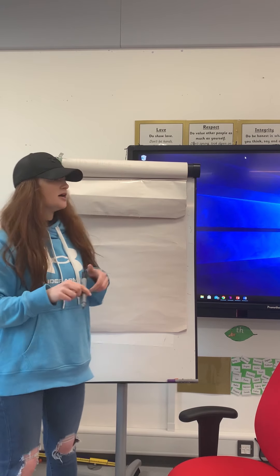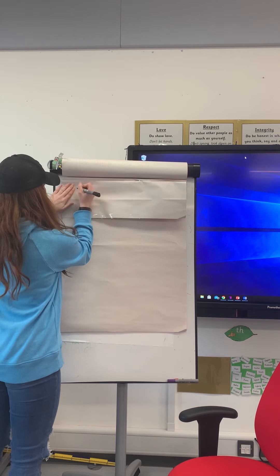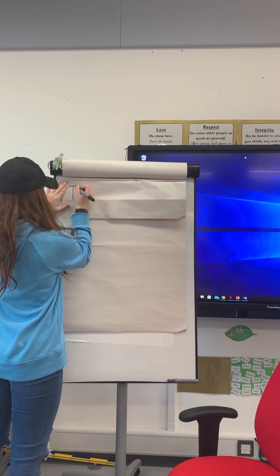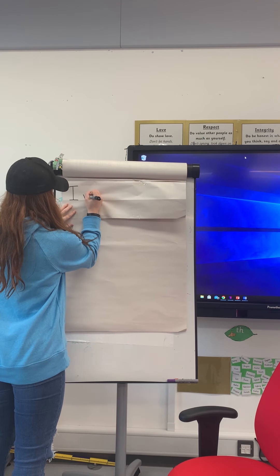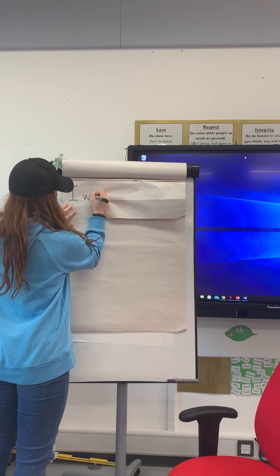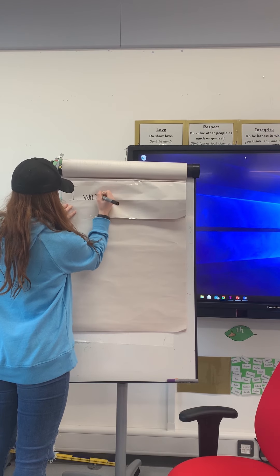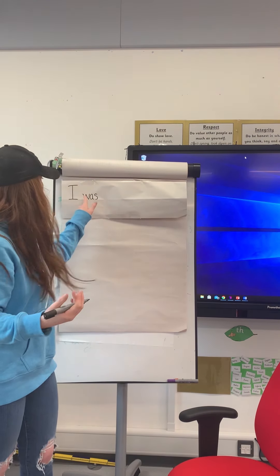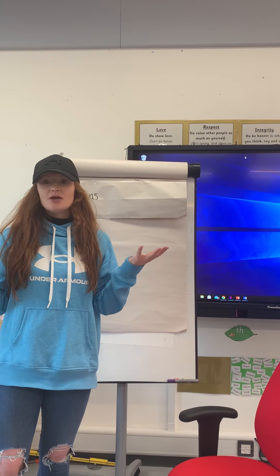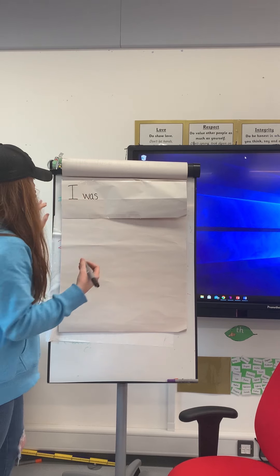Now we need to try and write it. 'I' is my first word — capital letter, personal pronoun, and also the beginning of my sentence. The next word is 'was', using my finger space. 'Was' is quite a tricky one because it's not spelled how you'd think — it's a common exception word. I always remember 'was' as W-A-S, because that's how it's spelled.